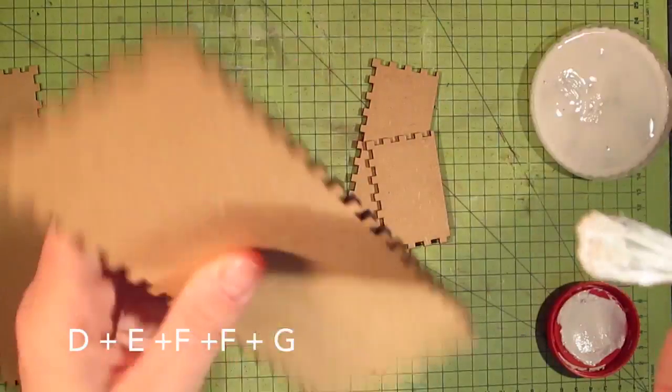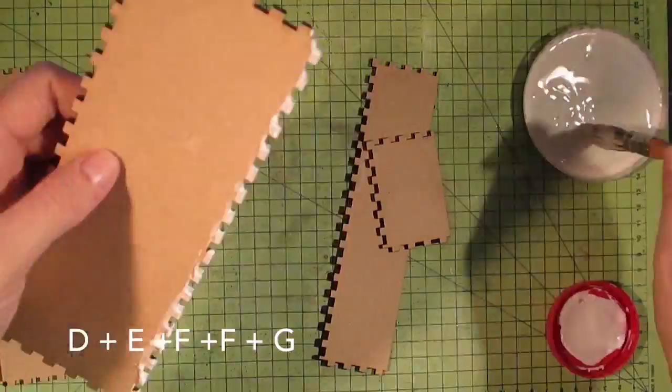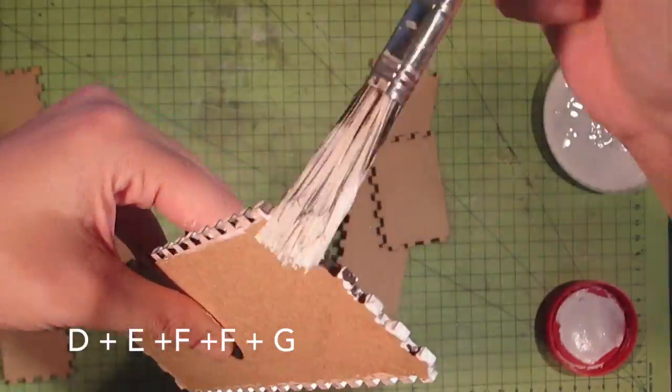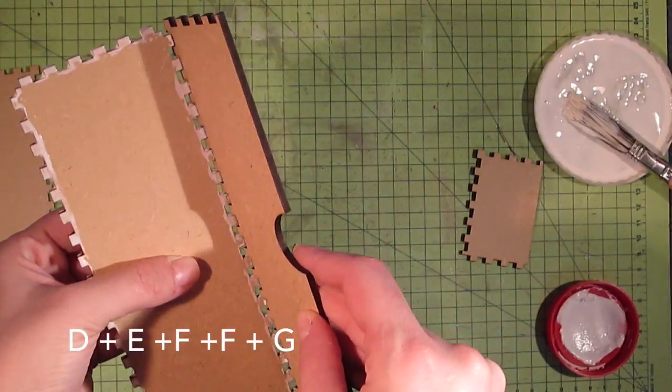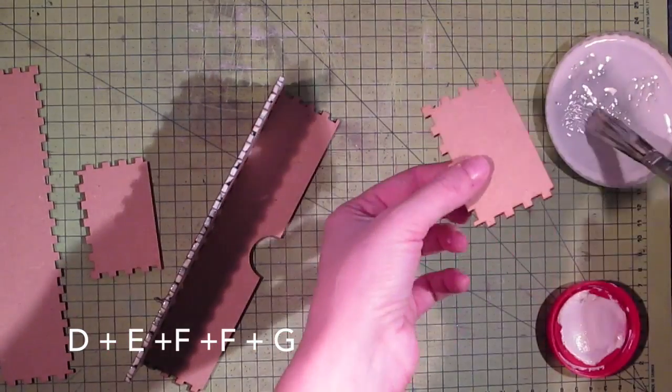Take panel D and add glue on each side of it. And now you can add panel E and panel F being careful to glue the sides.